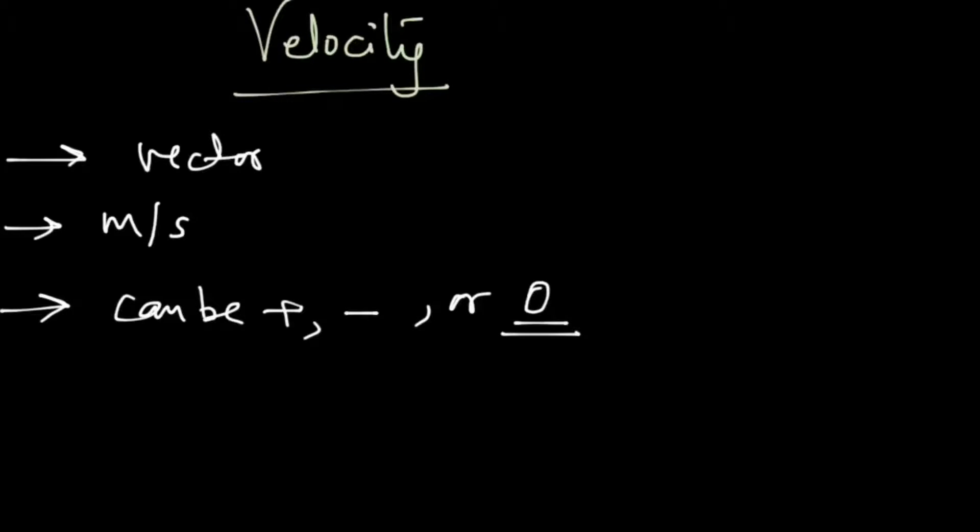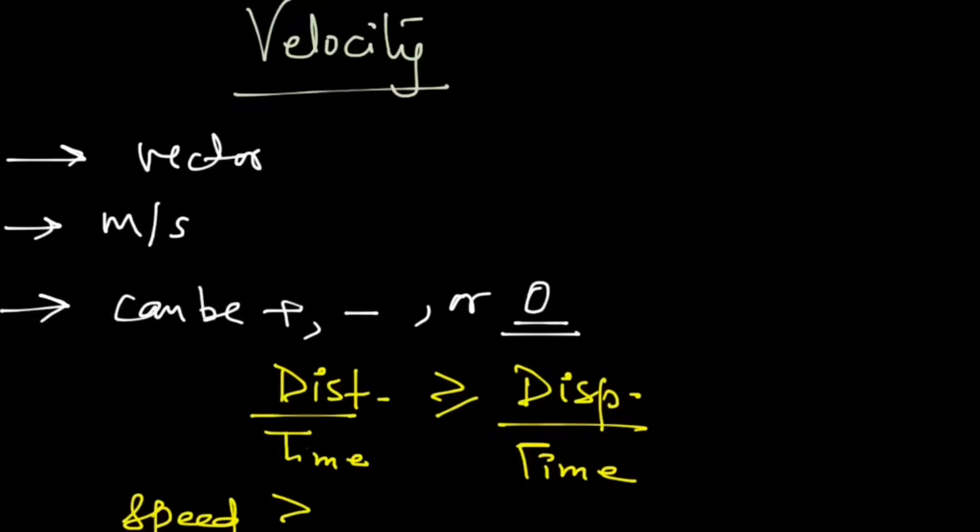And we will also have that relation which we had from between distance and displacement. Remember we wrote distance is always greater than equal to displacement? And so distance upon time will be greater than equal to displacement upon time. And so we will have speed always greater than equal to velocity, and we draw two lines here to indicate that we are talking about the value or magnitude of the velocity, not its direction, because speed does not have direction and directions can't be compared value-wise.